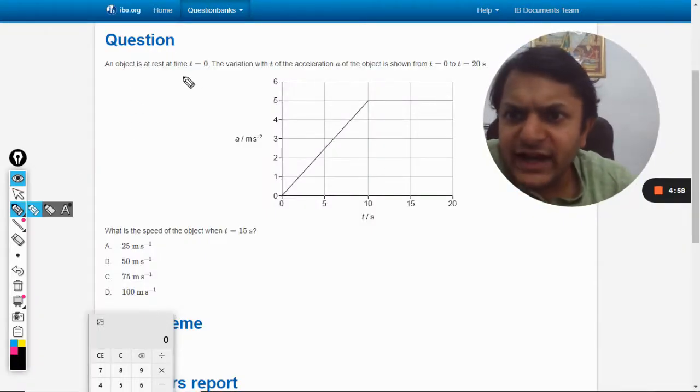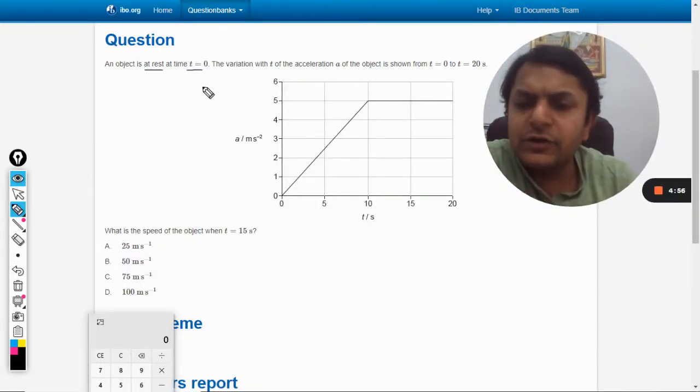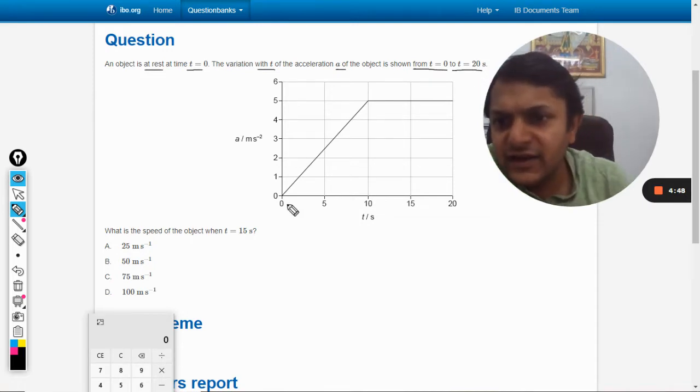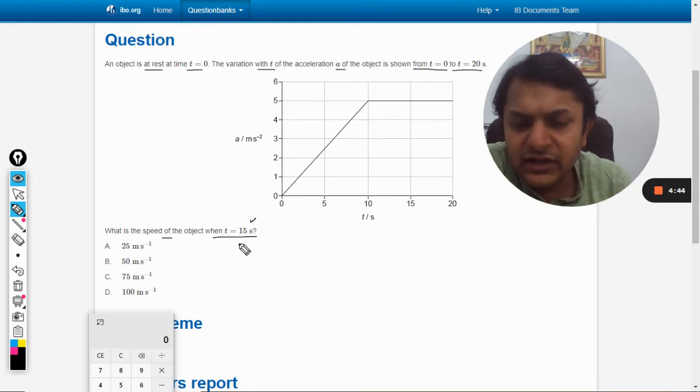Okay, here an object is at rest at t is equal to 0. The variation with time of the acceleration a of the object is shown from t is equal to 0 to t is equal to 20 seconds. What is the speed of the object when t is equal to 15 seconds?